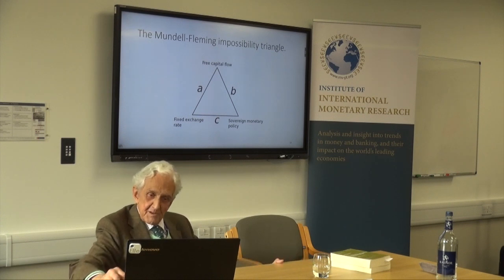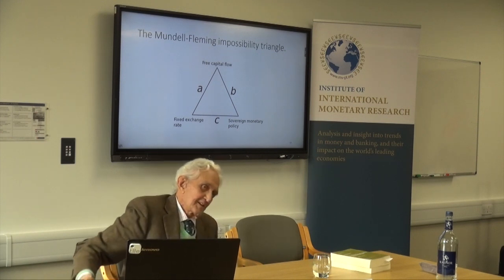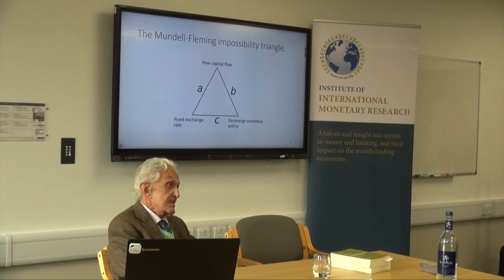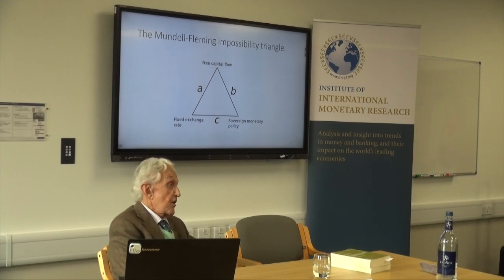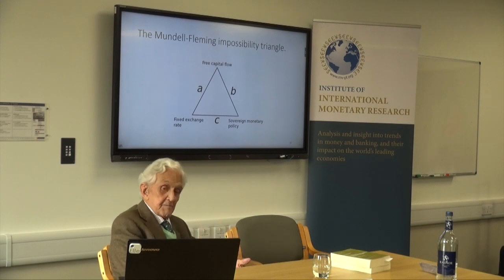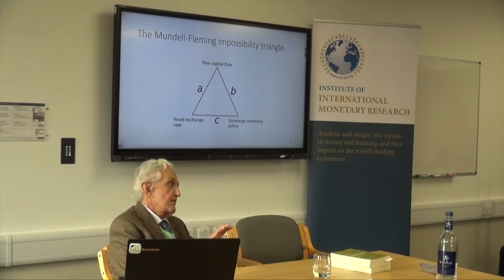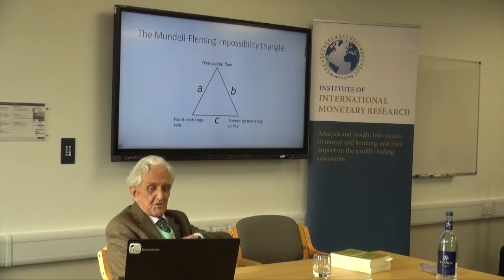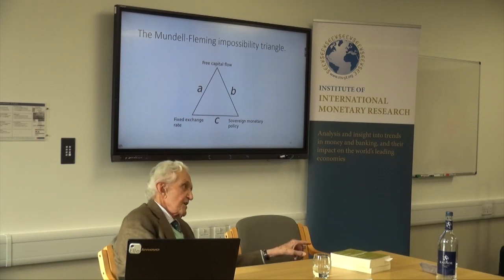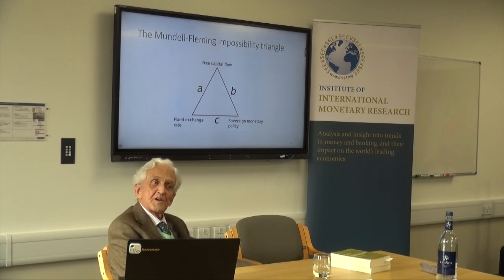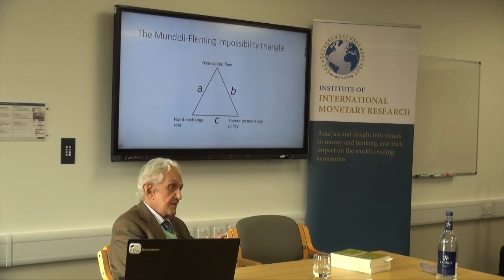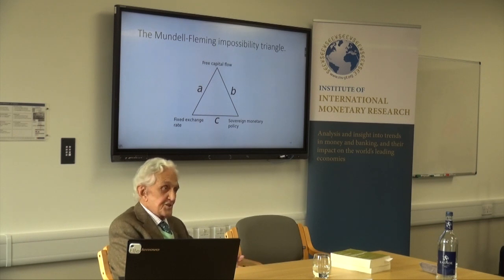The Mundell-Fleming impossibility triangle tells you what limitations an open economy and open market place in front of the governors of the Bank of England or governments. You can have two of these three things: you can have free capital flows and a fixed exchange rate, but if you try to also have sovereign monetary policy, it doesn't work. Similarly, you can have sovereign monetary policy and free capital flows, but you have to let the exchanges move. This Mundell-Fleming impossibility triangle is a limitation of the sovereignty of central banks that we must take into account.